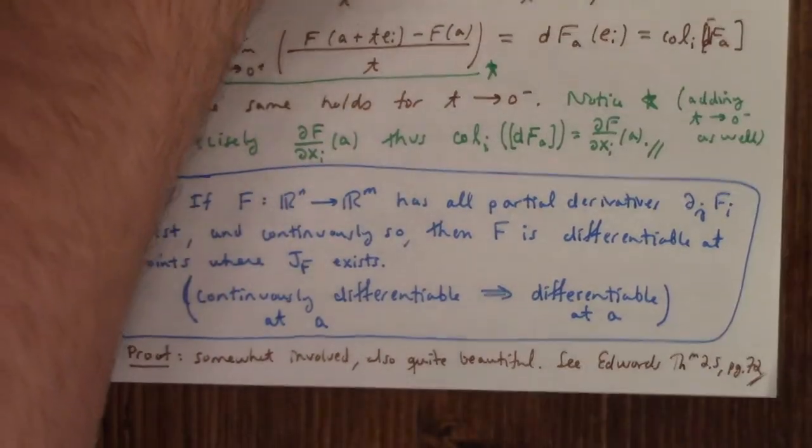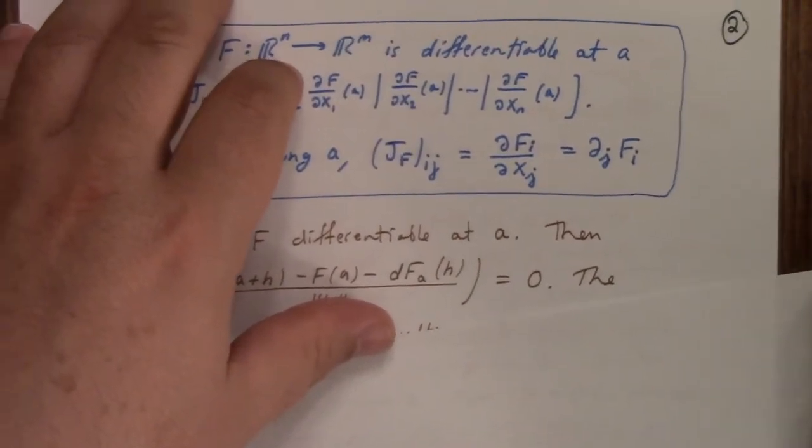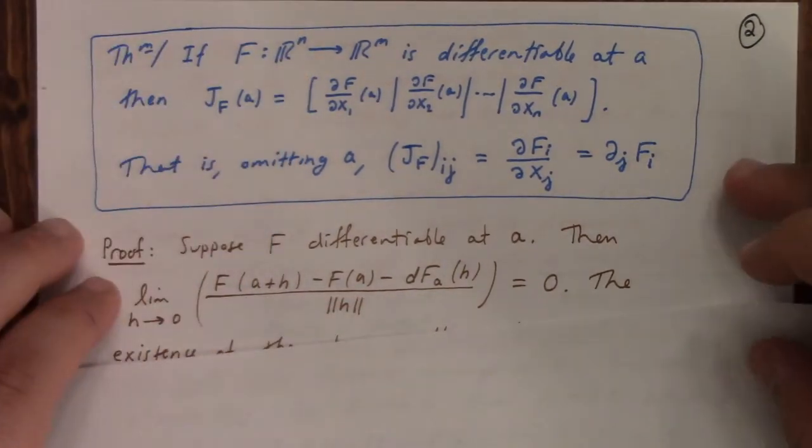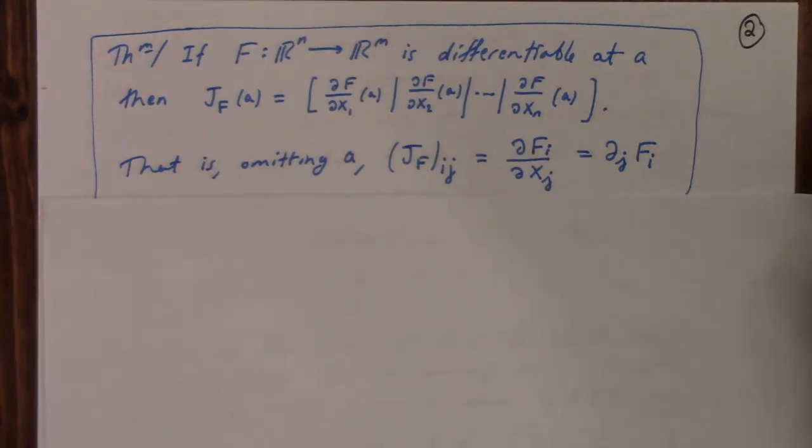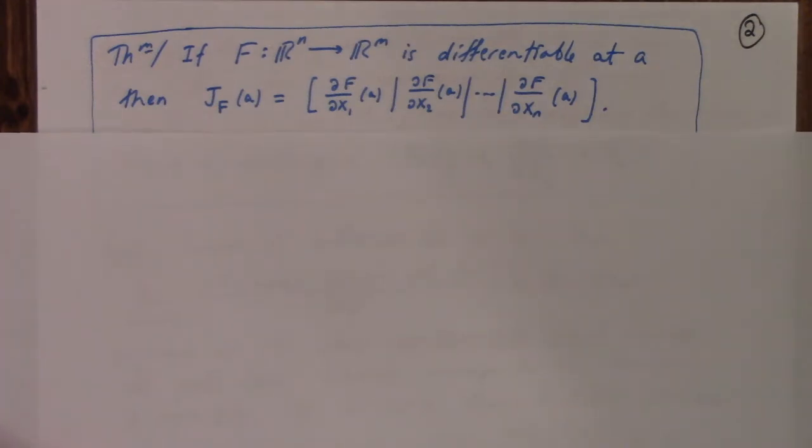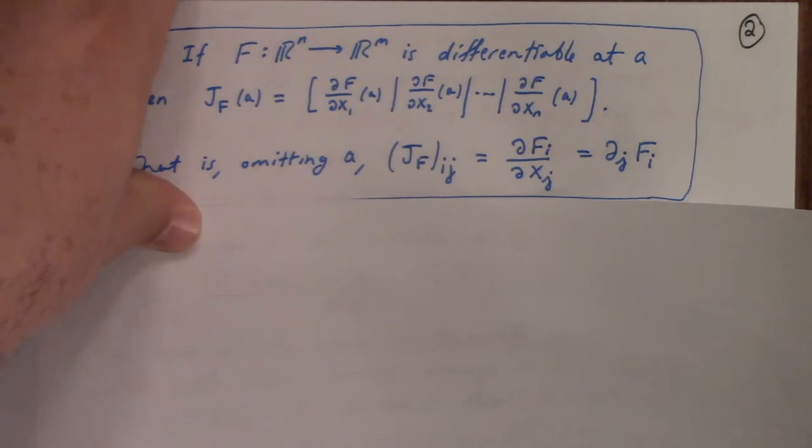So, theorem. Let's talk about this more. Let's talk about the connection between the Jacobian matrix and the differential. All right. They're related, but there's some subtle points connecting them. First of all, though, if it's differentiable, then the Jacobian exists, of course. But more than that, its columns are given by partial derivatives of the function with respect to the variables in the domain, evaluated at the point in question, of course.